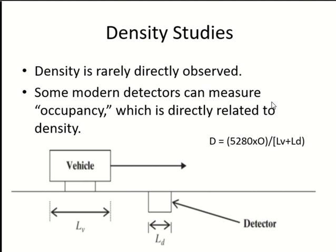The other two parameters are LB — the length of the vehicle, normally taken as the average car length of 20 feet — and LD, the length of the detector, which you already know since it is manufactured with a fixed length. Using these three parameters — O, LB, and LD — you can calculate density directly from field observations.